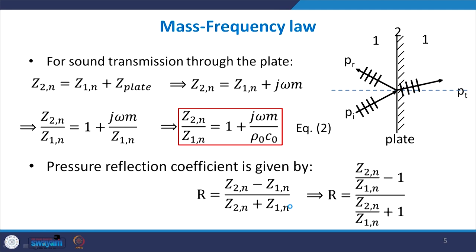If sound transmission takes place through this plate, the total impedance at the boundary is the impedance due to the plate vibration plus the impedance of the fluid medium. Z₂ₙ can be written as Z₁ₙ + Z_plate. Replacing Z_plate with j·ω·m, Z₂/Z₁ becomes 1 + j·ω·m/Z₁. Since the specific acoustic impedance of a fluid medium is ρ₀c₀ (density times speed of sound), we use that here.